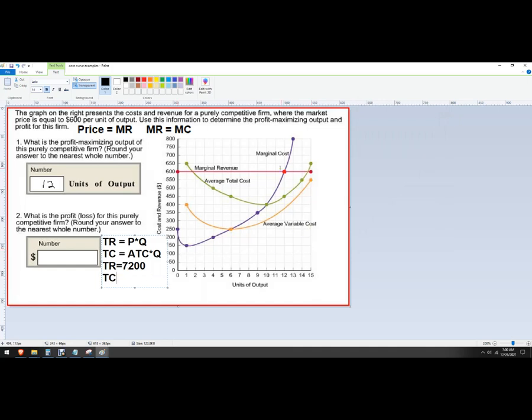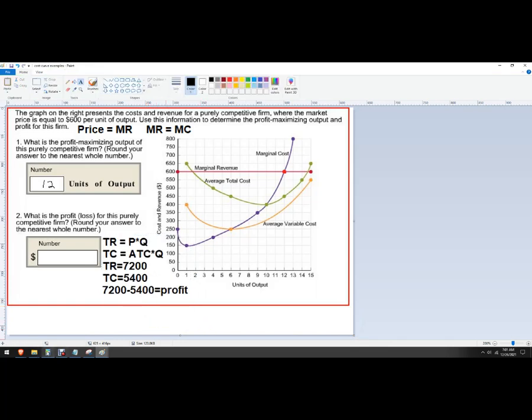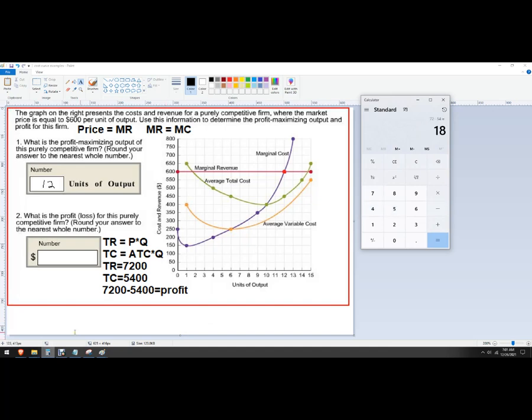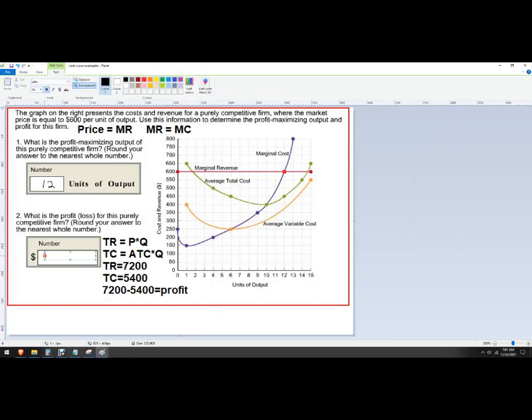And then our total cost. So the way to find that is we want to go down to where it hits average total cost, right here, 450. And so that 450 would be 450 times 12, which would be 5,400. And so that's just 7,200 minus 5,400 is our profit, which should be, give yourself a little bit more room there. And here's 1,800. So 1,800 is the answer there.